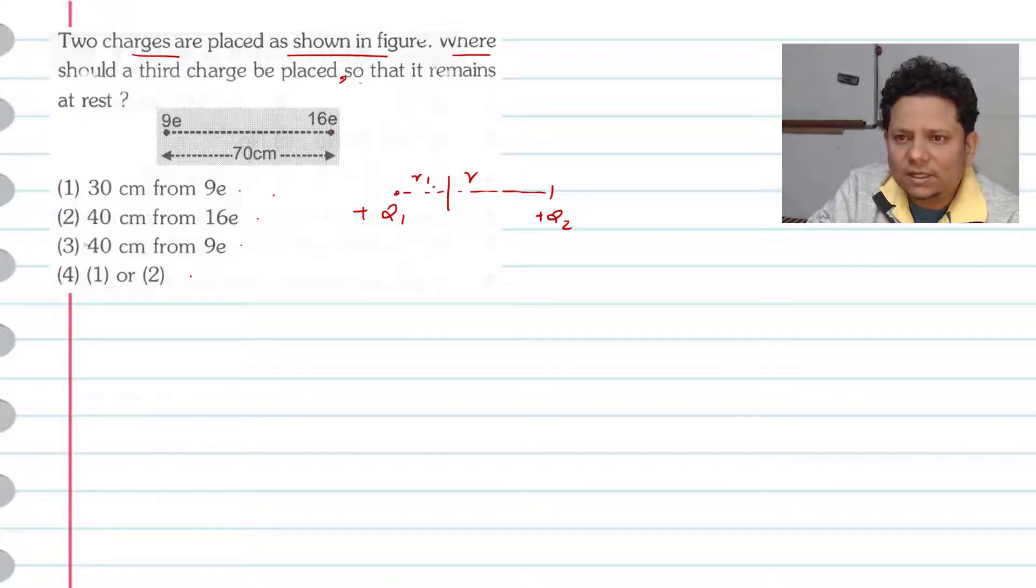at distance R1 from charge Q1. This R1 can be written as: R1 equals square root of Q1 divided by (square root of Q1 plus square root of Q2), multiplied by R.